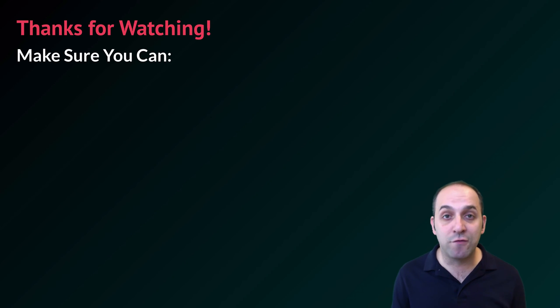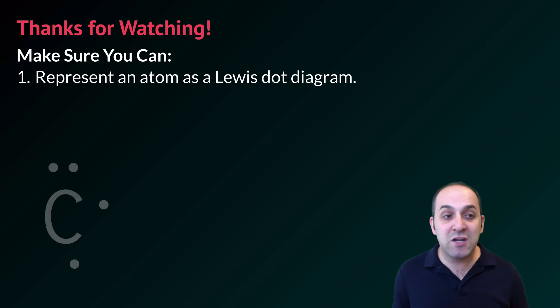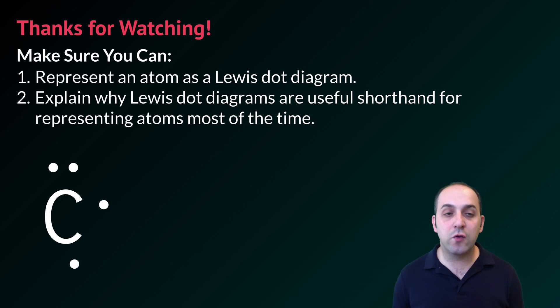Thanks for watching our discussion of Lewis dot diagrams. Make sure you can represent an atom as a Lewis dot diagram. Given any element on the periodic table, you should be able to represent it as a dot diagram. Also explain why dot diagrams are a useful shorthand for representing atoms.